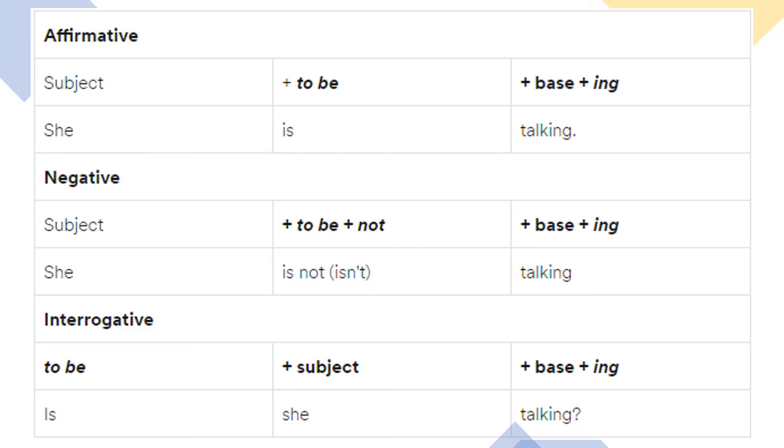In interrogative, we have to be, is, plus subject, she, and base plus ing, talking. So, it will be in the question form, is she talking.